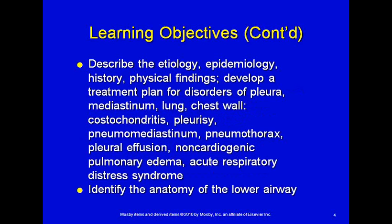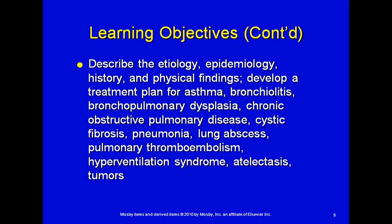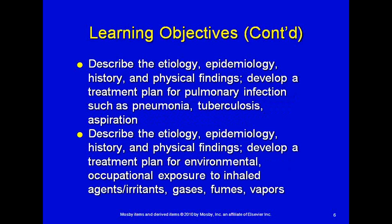We'll describe all those things for disorders of the pleura, the mediastinum, the lung, and the chest wall. We'll talk about costochondritis, pleurisy, pneumomediastinum, pneumothorax, pleural effusion, non-cardiac pulmonary edema, and acute respiratory distress syndrome. We'll also identify the anatomy of the lower airway and develop treatment plans for asthma, bronchiolitis, bronchopulmonary dysplasia, COPD, cystic fibrosis, pneumonia, lung abscesses, pulmonary thromboembolism, hyperventilation syndrome, atelectasis, tumors, tuberculosis, and aspiration.